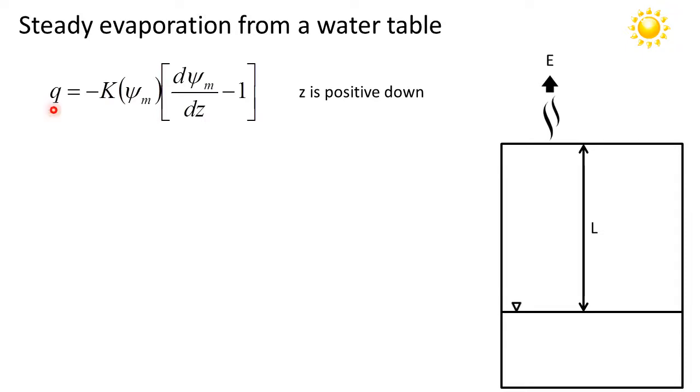So q here is a soil water flux which is equal to negative hydraulic conductivity K, which is a function of ψ_m the matrix potential of the soil, multiplied by the hydraulic gradient which consists of the gradient in the matrix potential dψ_m/dz minus 1 for the gradient in gravitational potential. In this case I've defined z as being positive downward.